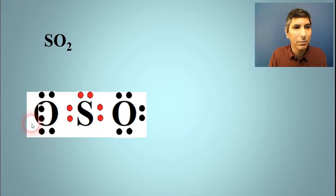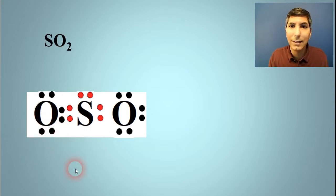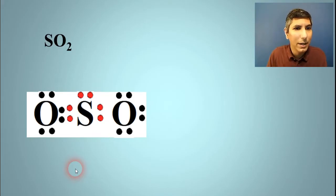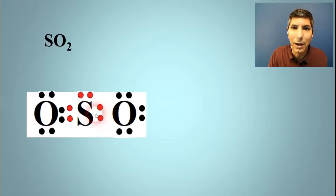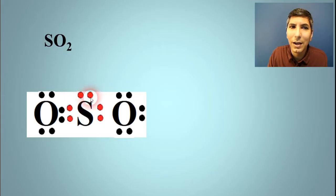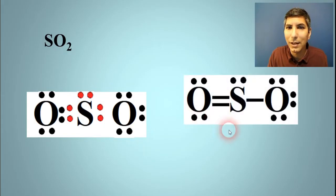So we're going to have to move two of these dots from the outside into the middle. I'll take a couple dots right from there, move them into the middle, and now everything has eight. We have two shared pairs here, so that's a double bond, and we have one shared pair here, so that's a single bond, and then we have one lone pair up here on top of the sulfur.